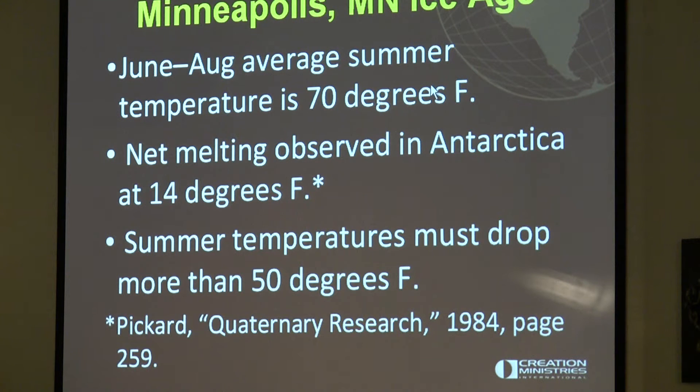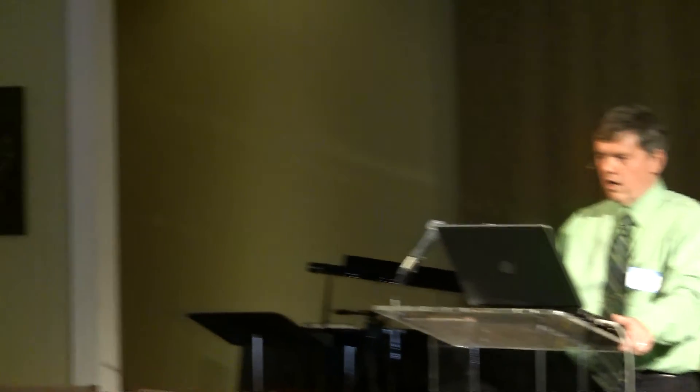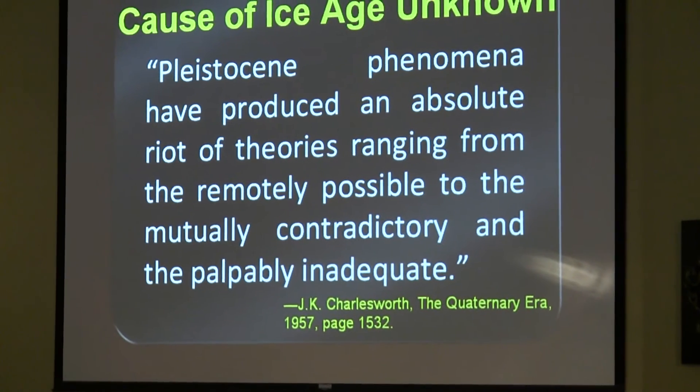The uniformitarian evolutionary scientists rely on present processes to explain all of the past — the rocks, the fossils, and the past climate. What kind of present processes of climate change could cause this? Far from being a showcase for their model, the ice age is a huge problem.